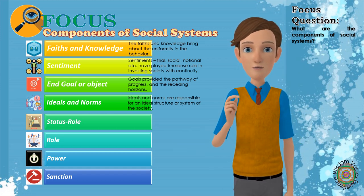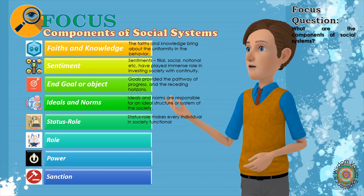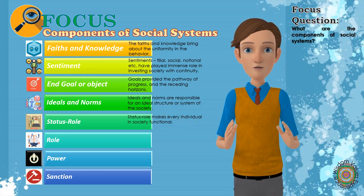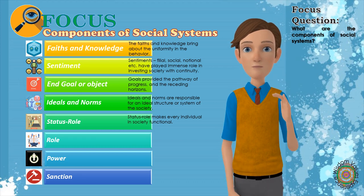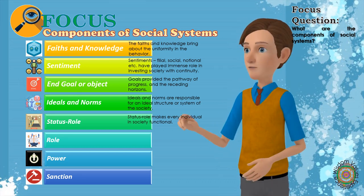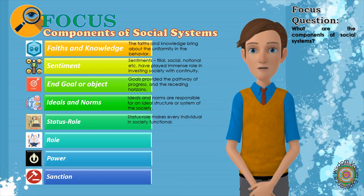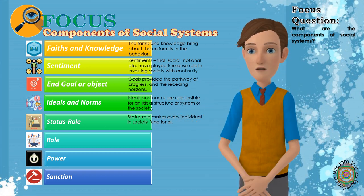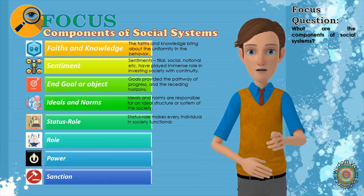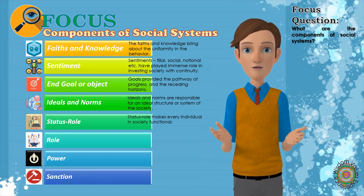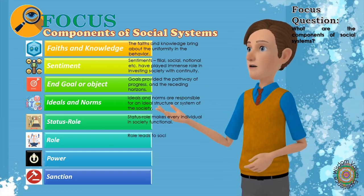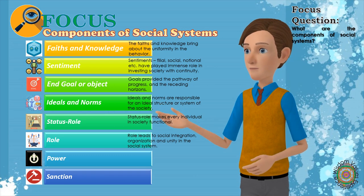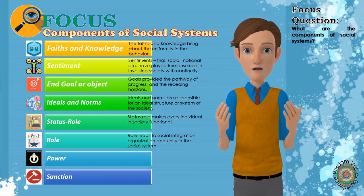5. Status Role: Every individual in society is functional. He goes by status role relation. It may come to the individual by virtue of his birth, sex, caste, or age. One may achieve it on the basis of service rendered. 6. Role: Like the status, society has prescribed different roles to different individuals. Sometimes we find that there is a role attached to every status. Role is the external expression of the status. While discharging certain jobs or doing certain things, every individual keeps in his mind his status. This leads to social integration, organization and unity in the social system. In fact, statuses and roles go together; it is not possible to separate them completely from one another.